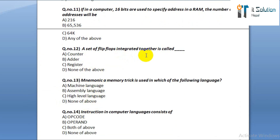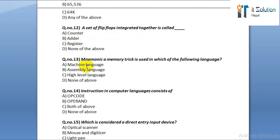Option B: 65536. Option C: 64000. Option D: any of above. Question number twelve: a set of flip-flops integrated together is called option A: counter. Option B: adder. Option C: register. Option D: none of the above.